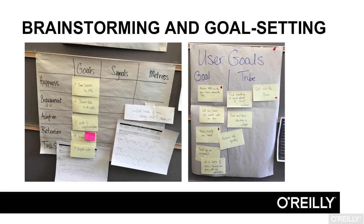One of the most important roles a UX professional plays is in helping stakeholders understand how to balance user goals with the goals of the business. To this end, we spend a large chunk of our time working directly with stakeholders, brainstorming, aligning on shared goals, and defining the goals of a specific design or research project from both the business and user perspectives.